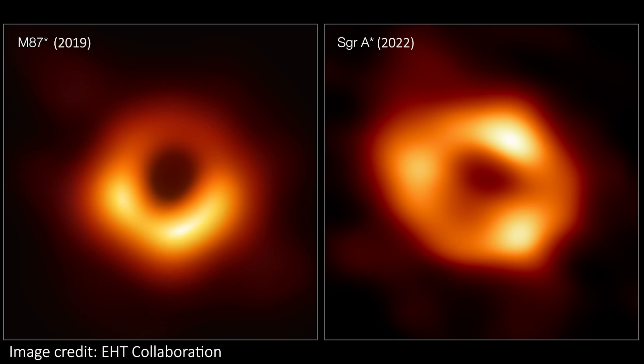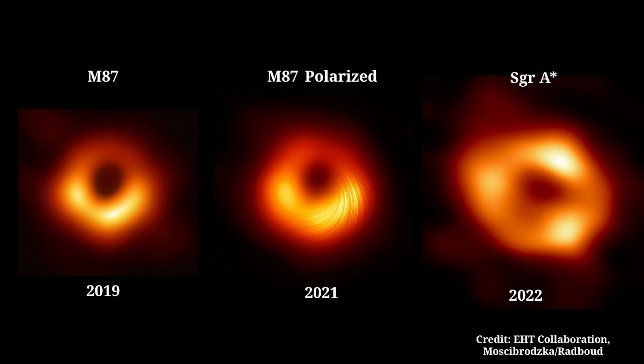Let's now compare this new image with the previous black hole image released in 2019. That previous image was of a black hole in a galaxy called M87, and that black hole is both much more massive and much further away than Sagittarius A-star. Combining these two things actually means the two black holes look a similar size to us, and this is why they're the two black holes we've tried to image first.